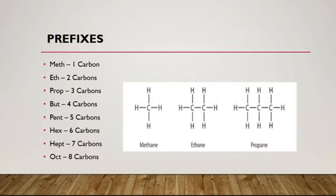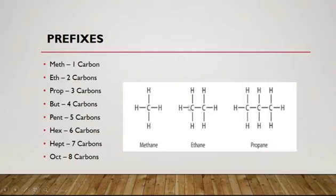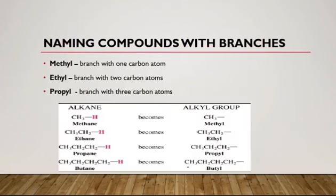For example, methane has one carbon and belongs in the alkane group, so we take 'meth' and add 'ane' from alkane. With two carbons still in the alkane group we have ethane. With three carbons in the alkane group we have propane.